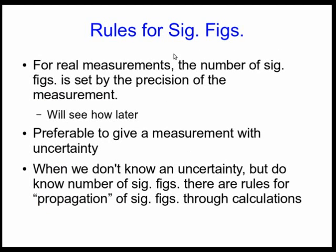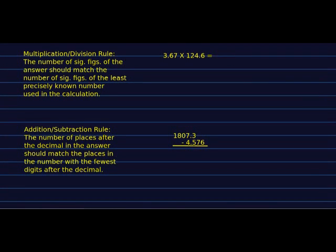So there are some rules, and they actually are not really, really important. And the reason is that for real measurements, it's always better to write down an uncertainty. You need to know something about the precision of the measurement. But when you don't know the uncertainty but you know the number of significant figures, there are some rules for how to propagate the sig figs through calculations.